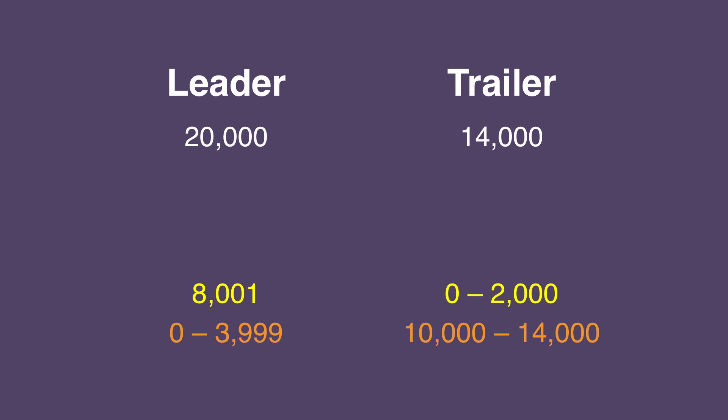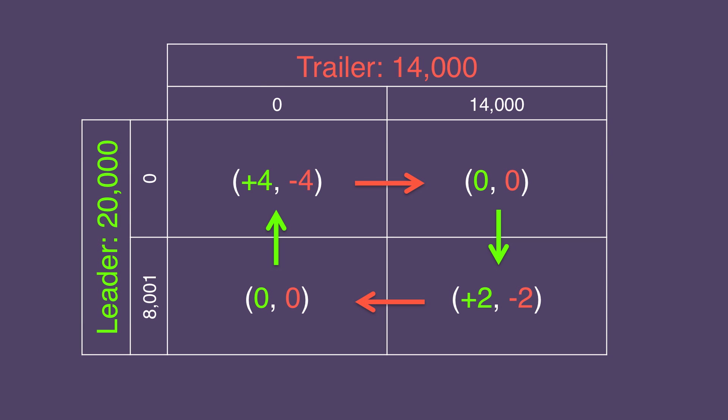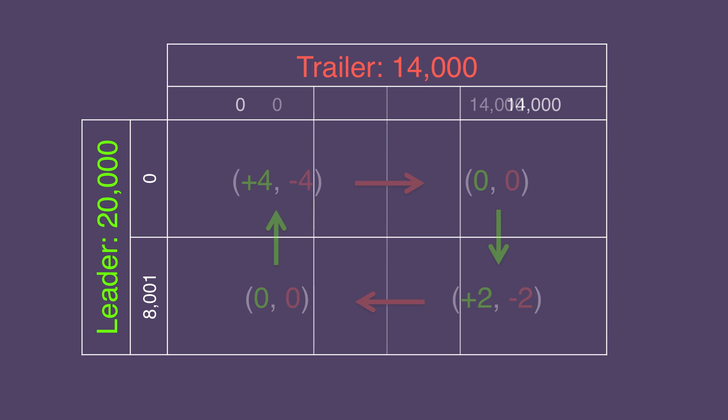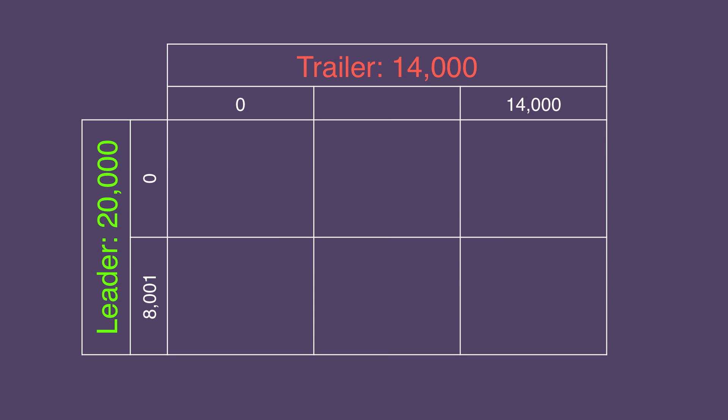Let's return to our favorite wagering example, where the leader has 20,000 and the trailer has 14,000. We calculated that each player has two ranges of wagers from which you can choose. Here's the question: why wouldn't a player choose something outside of these ranges? We modeled the outcomes of our ranges in a payoff matrix. Now let's add a column to compare what happens if the trailer picks something outside of these ranges — say, 5,000.